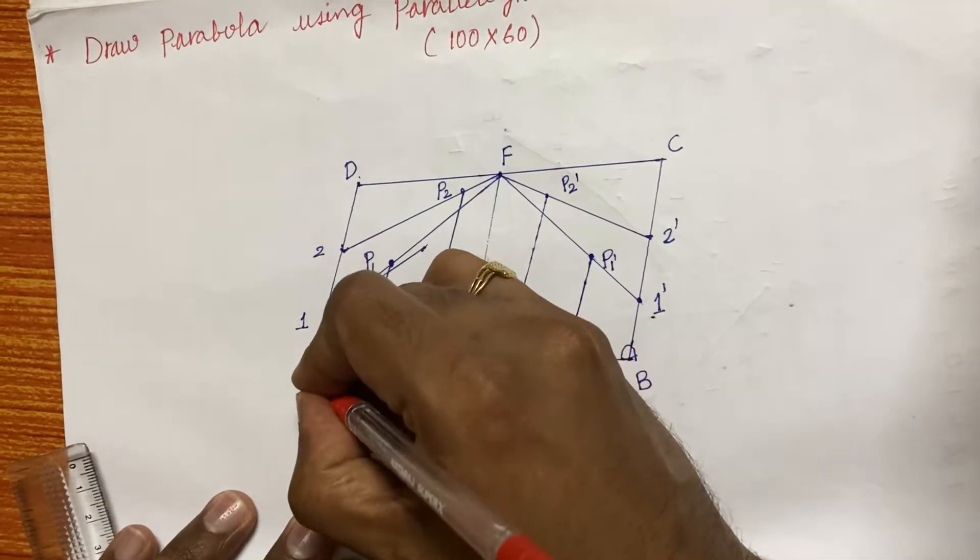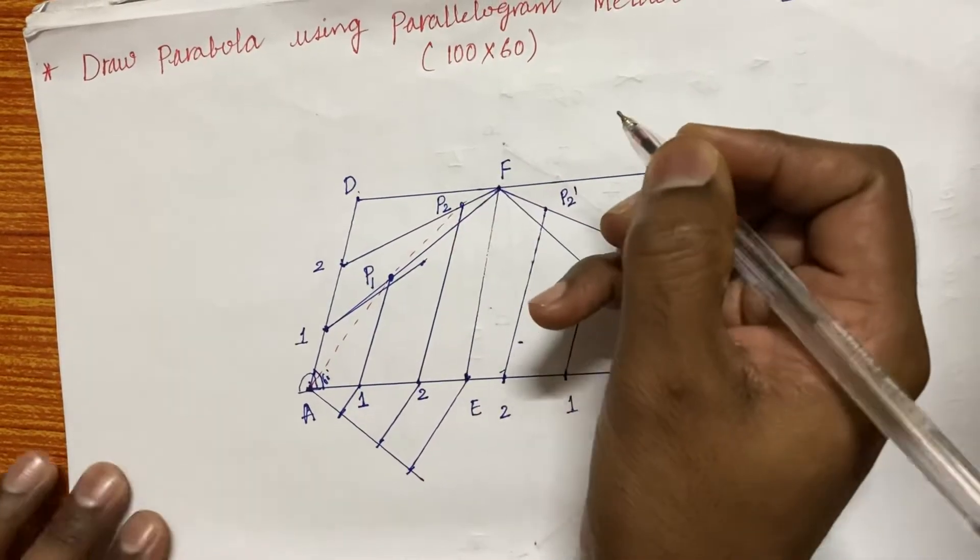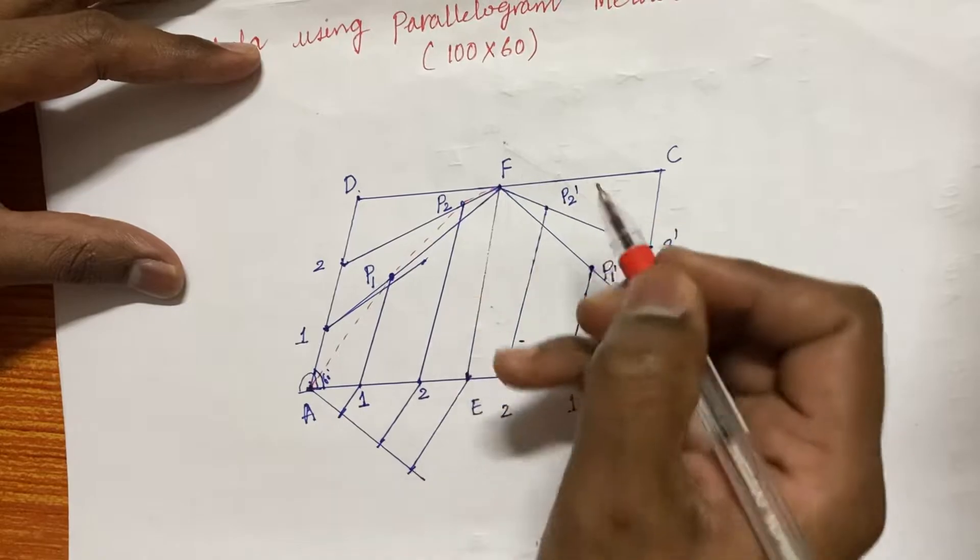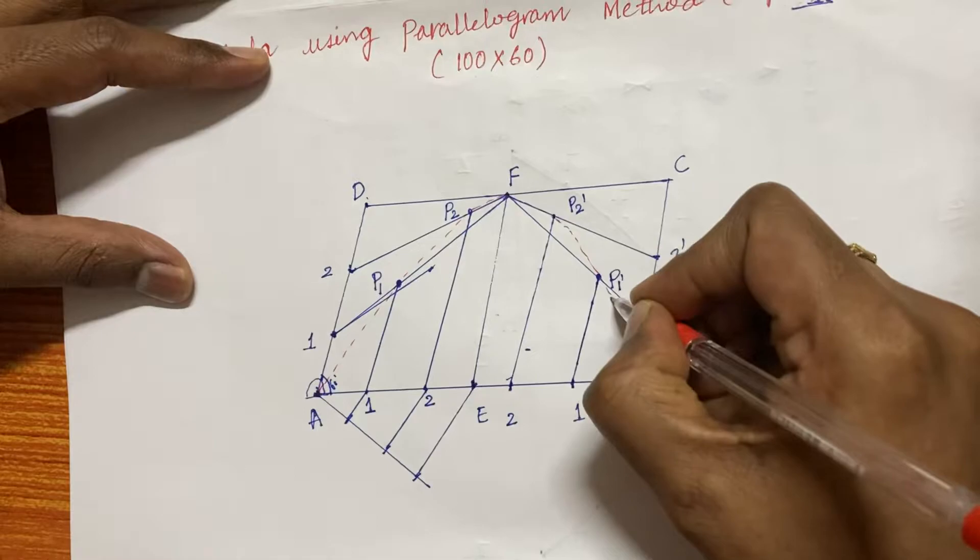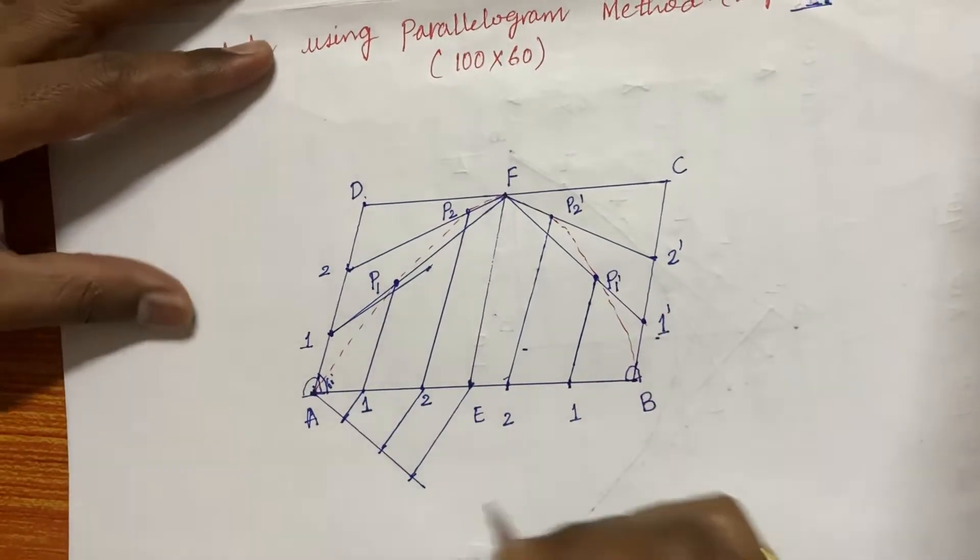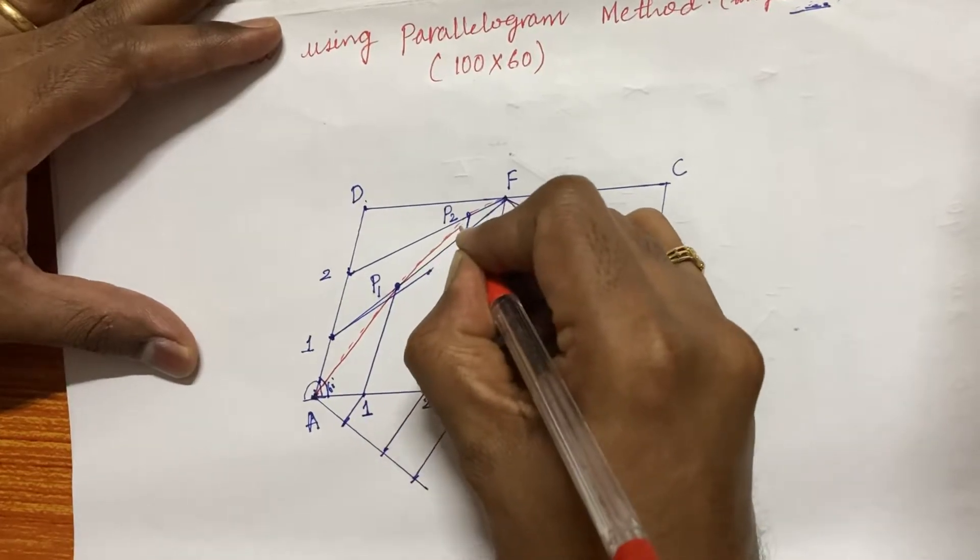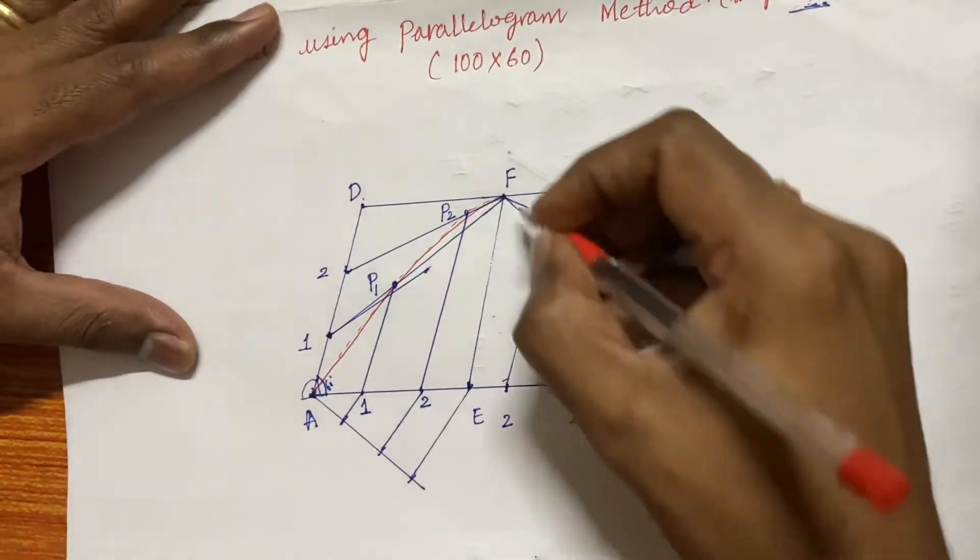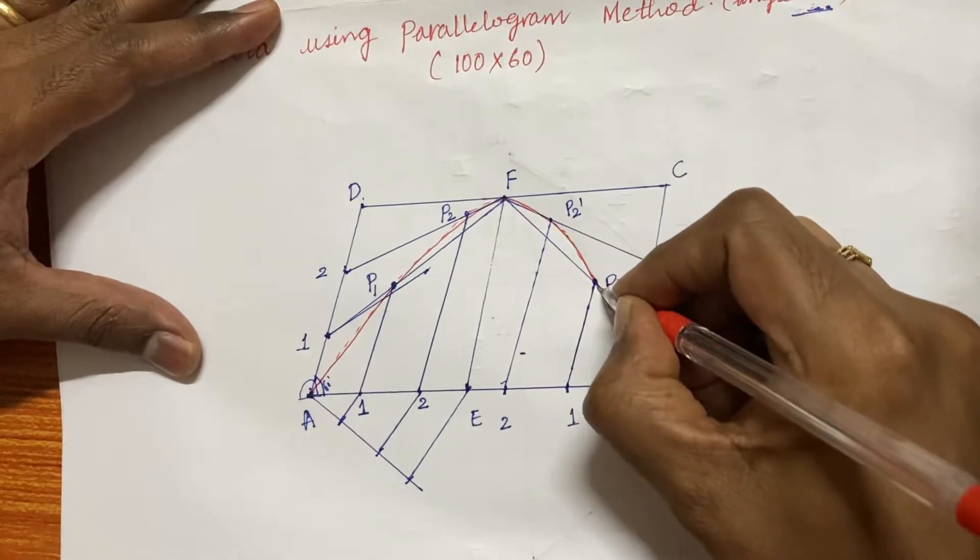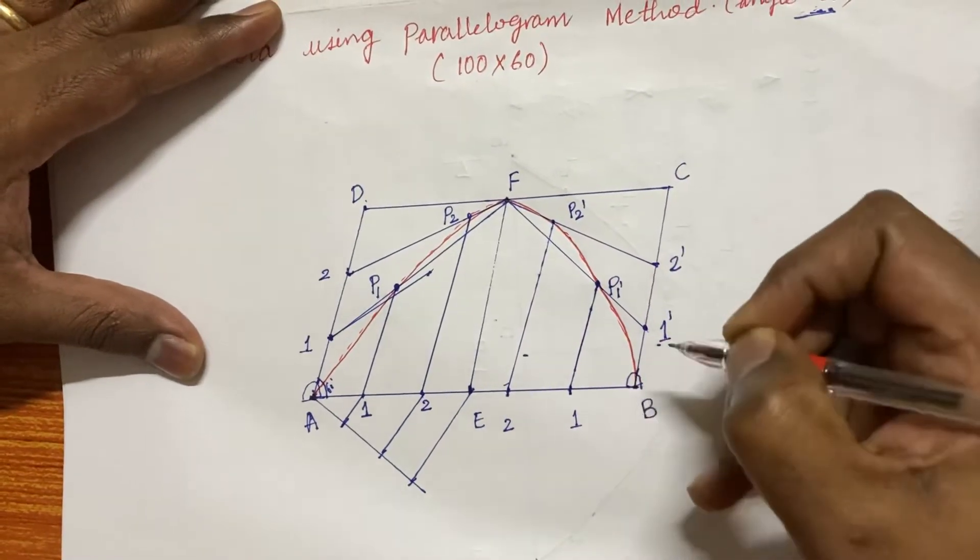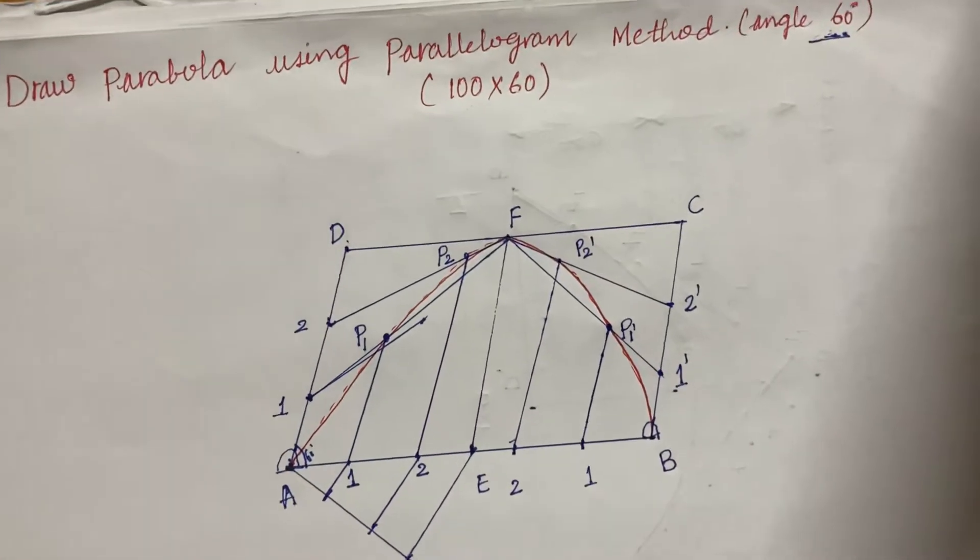Before that, make the dots from A and join all these points. Join all these points so that till F you are going to join. Later, it is going to be touching P2 dash and further you are going to reach the B point. So without lifting your HB pencil, draw in all these points in order to get a smooth curve. This is how you are supposed to work out the parabola construction using a parallelogram method.